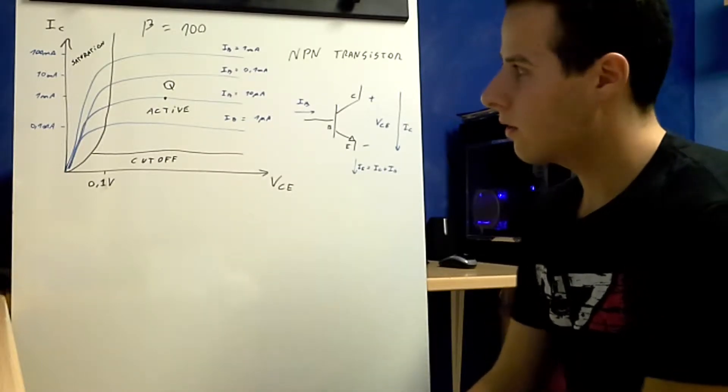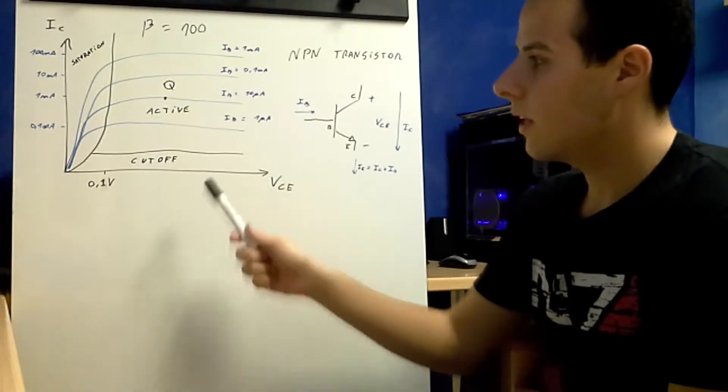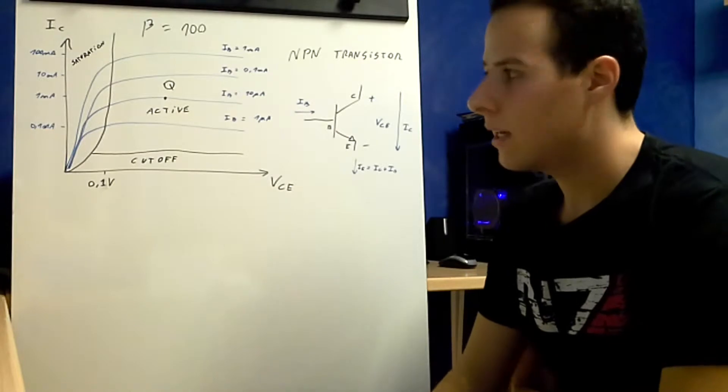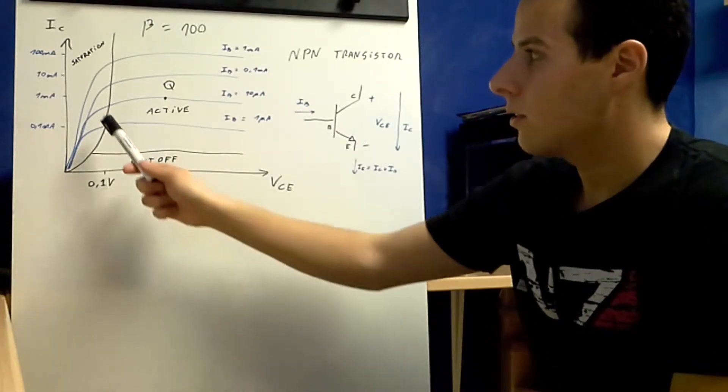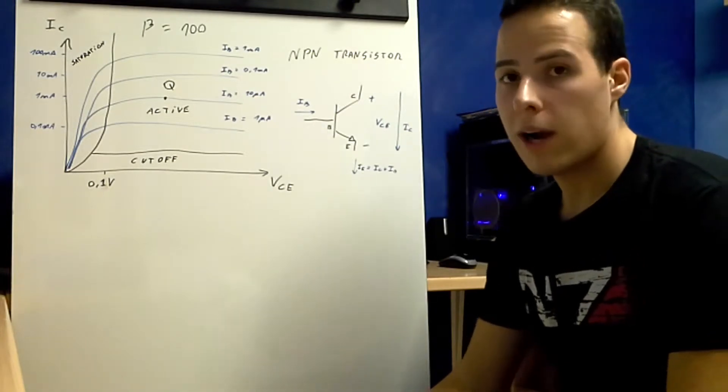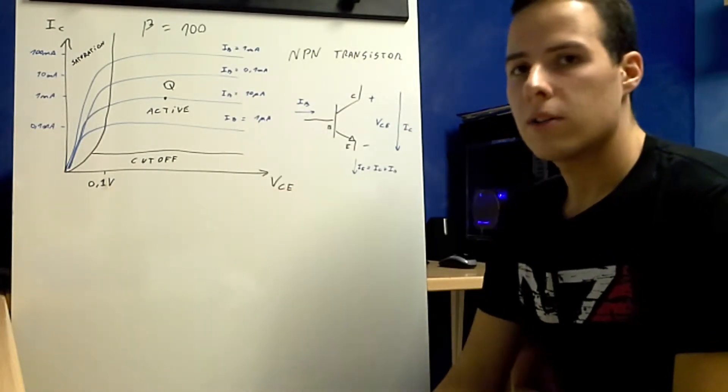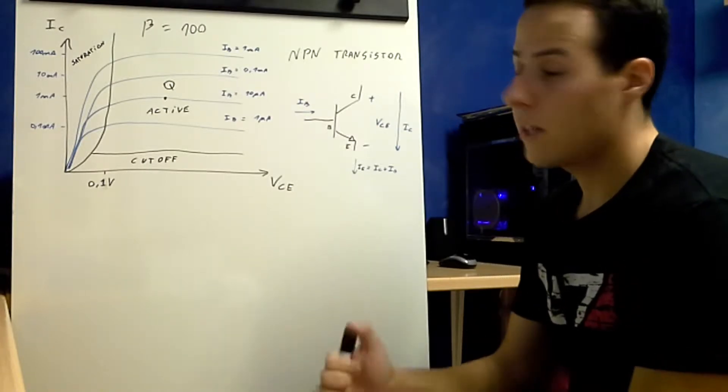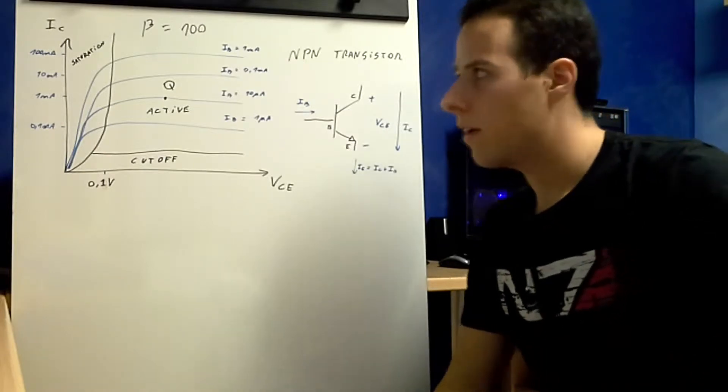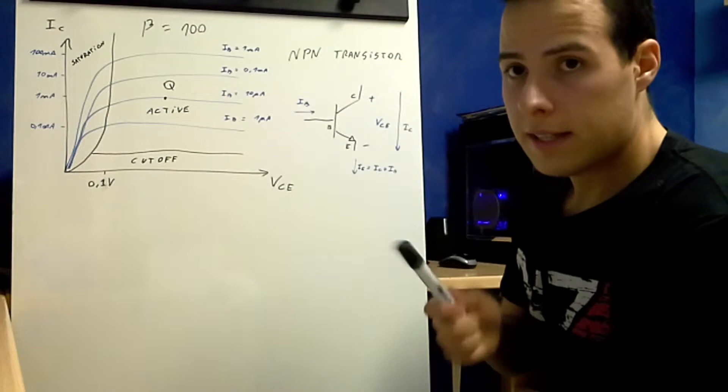Because your transistor can operate in three different ways. You have the cutoff region, where your transistor behaves like an open circuit. And you have the saturation region, where your transistor behaves like a wire, like a short circuit. And you have the active region, where your transistor is linear and it behaves like an amplifier, like a current amplifier.